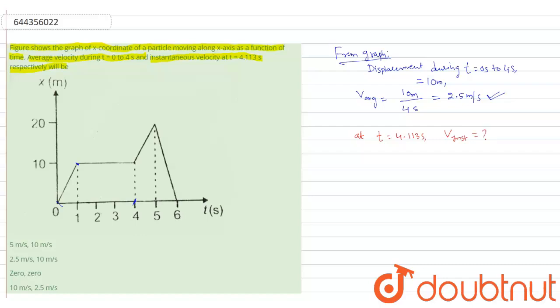If you observe from the graph, 4 to 5 seconds it is moving with constant velocity because it is a straight line graph. Hence motion is uniform. In an x-t graph, if straight line is there, definitely that is uniform motion and moving with constant velocity.